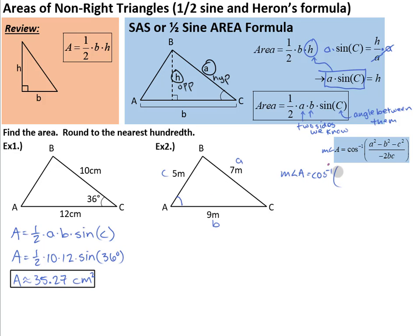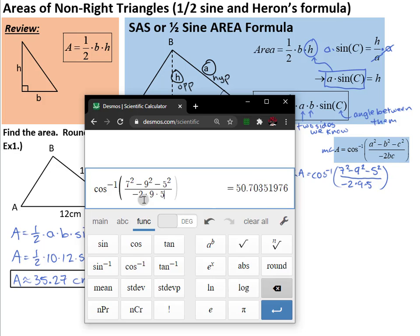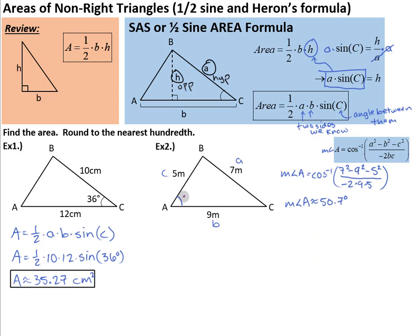We start with the side opposite A, which is 7 squared minus b squared, 9 squared, minus c squared, or 5 squared. All divided by negative 2 times b times c, 9 times 5. And that's all inside the inverse cosine. So let's go to Desmos our calculator again. We need the inverse cosine, which is under functions. Start with a fraction. 7 squared minus 9 squared minus 5 squared over negative 2 times 9 times 5. So our angle is about 50.70, but we'll go to one decimal place here. 50.7. So we now know one of the angles. This is about 50.7 degrees. We had to go a little bit out of our way to find it, but that's fine.